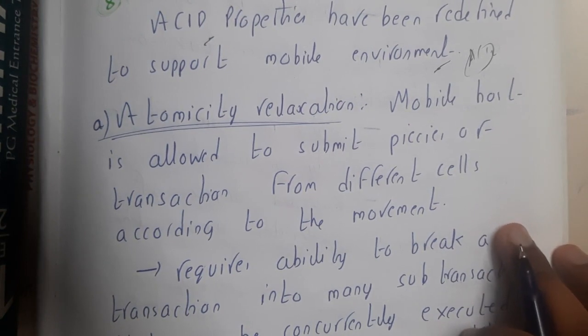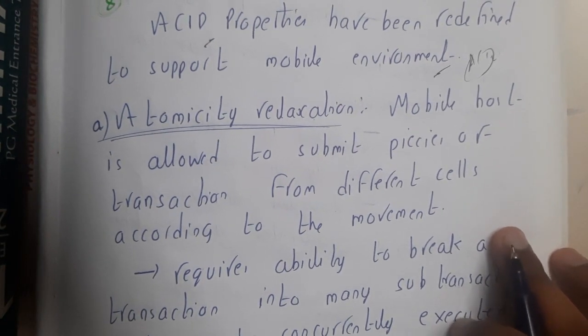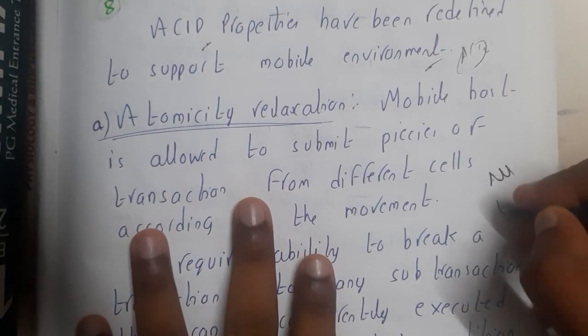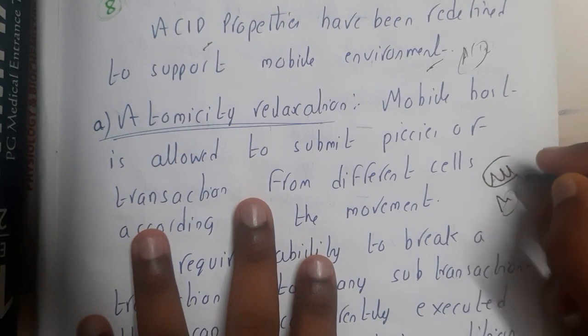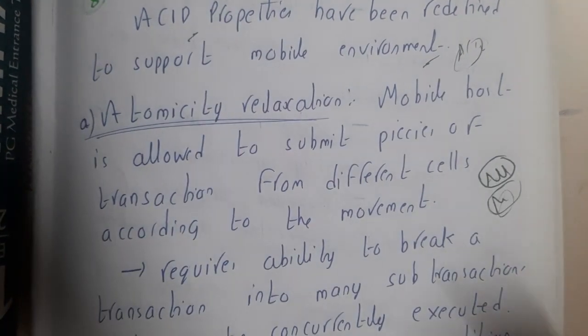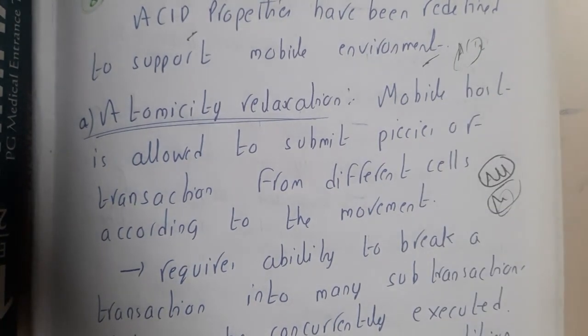What is atomicity? Basically, atomicity is nothing but all or none - the exact terminology which we discussed in DBMS also. All or none means if a transaction has been started, it should be completely done or it should not even start, like go back to the previous stage. This concept is called atomicity.